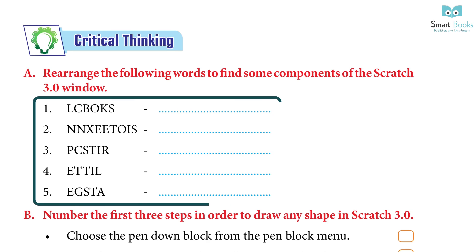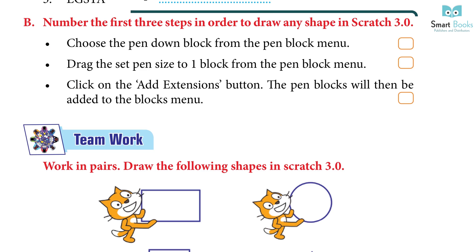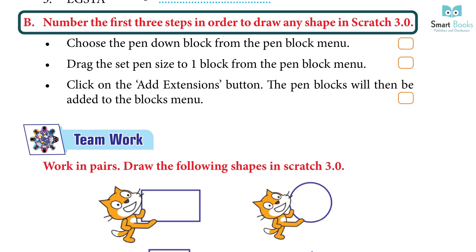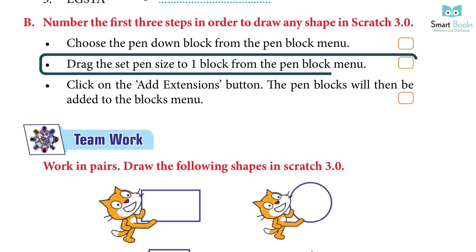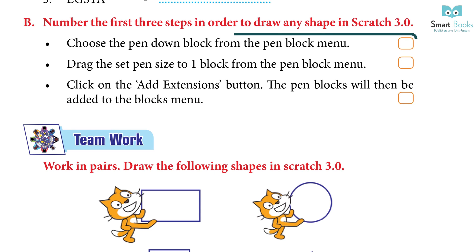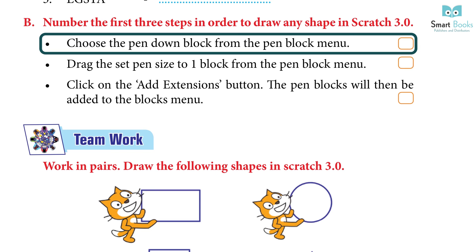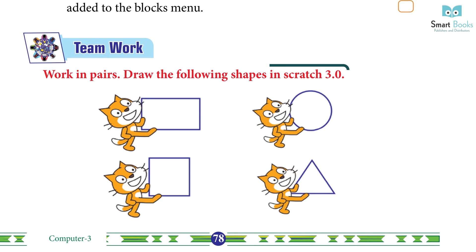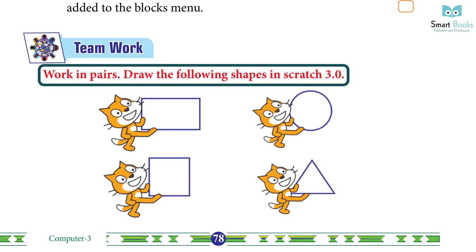Critical Thinking: A — Rearrange the following words to find components of the Scratch 3.0 window: Blocks, Extensions, Script, Title, Stage. B — Number the first three steps in order to draw any shape in Scratch 3.0: drag the set pen size block from the pen menu; click on the Add Extension button so pen blocks are added; choose the pen down block from the pen block menu. Teamwork: Work in pairs to draw shapes in Scratch 3.0 — Do it yourself.